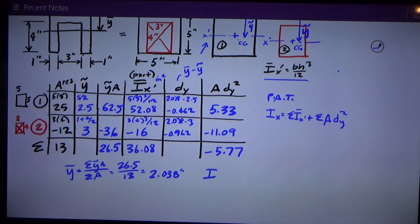I bar x prime, and this is the i bar x prime of the entire shape, not to be confused with the i bar x prime of the part and the piece which is this column here. So it's the sum of the i bar x primes of the shape, of the individual pieces, 36.08 minus 5.77, so that equals 30.31 inches to the fourth.